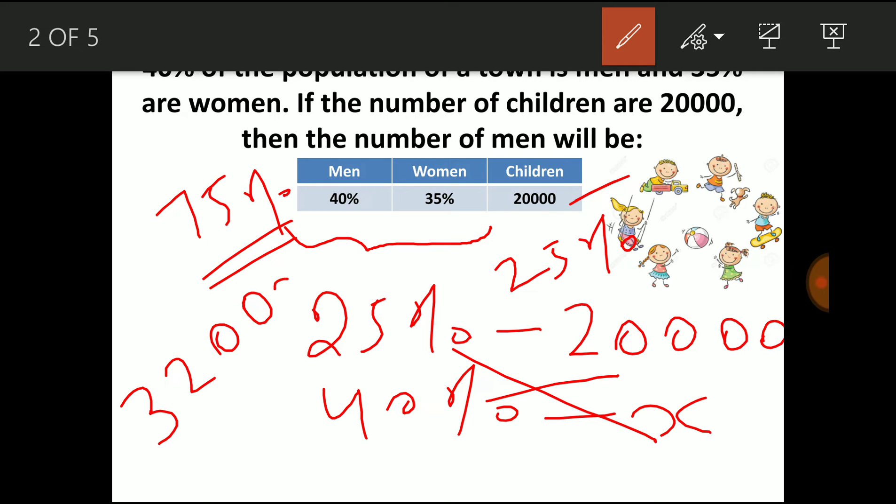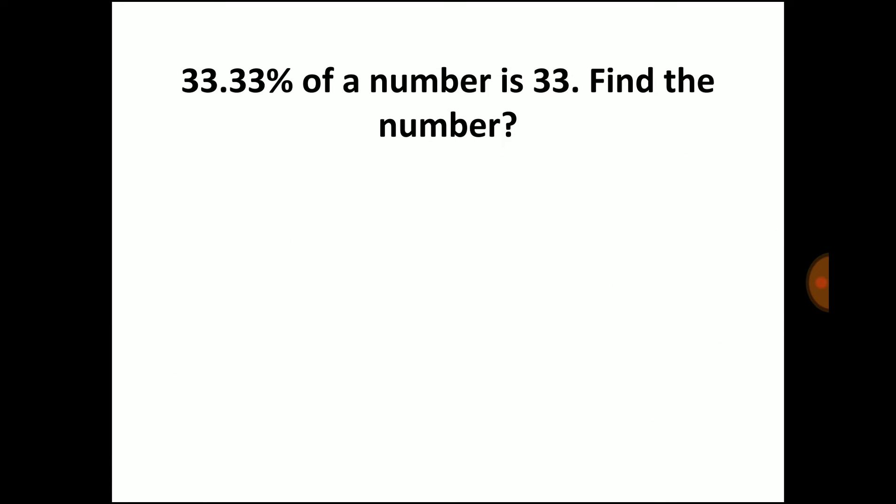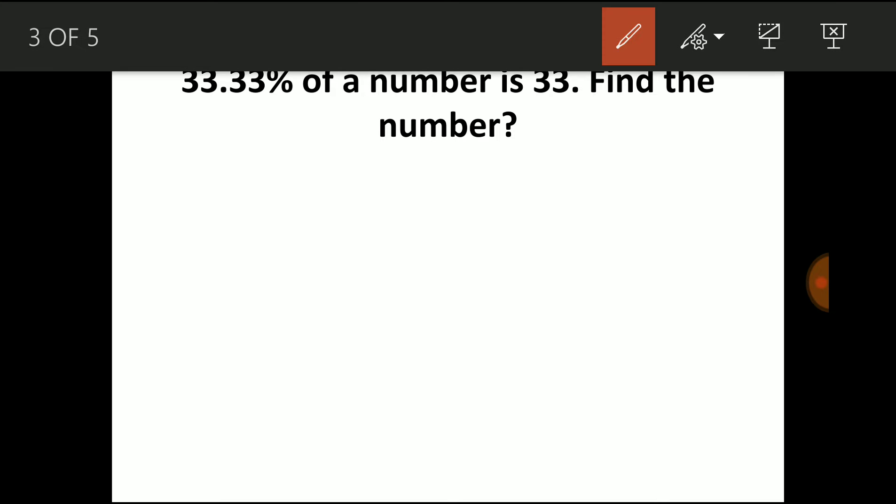Now moving to next example: 33.33% of the number is 33, find the number. So the question is you have to find the original number. The original number is always 100%. Now you have to find 100% of the number.